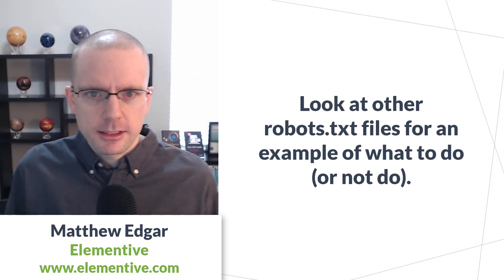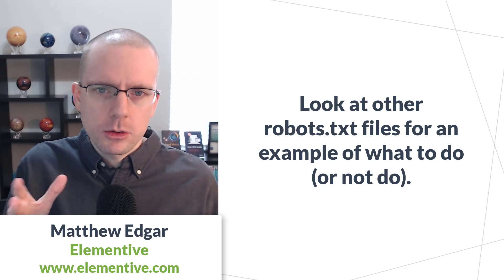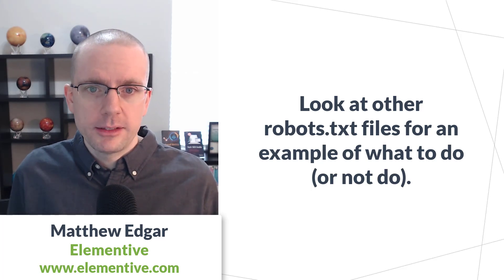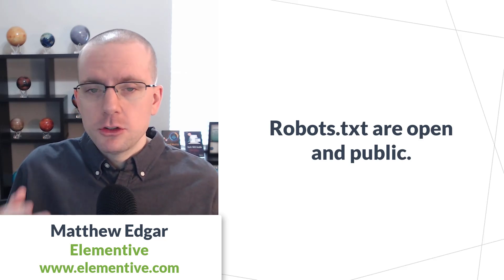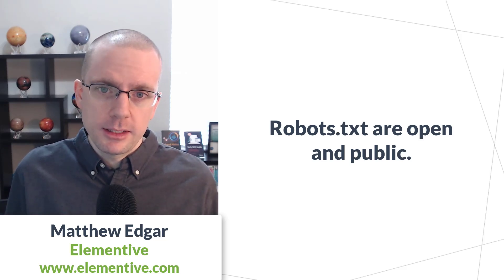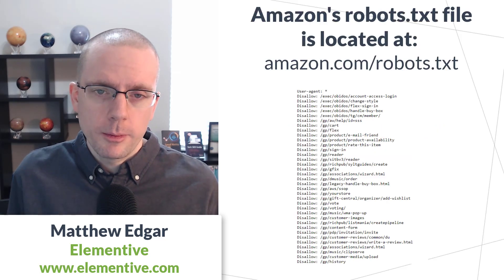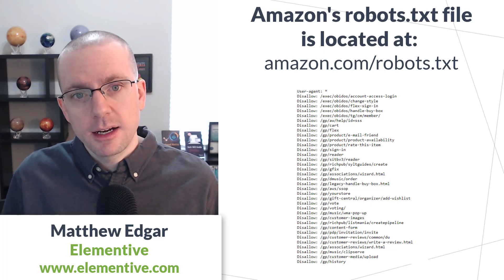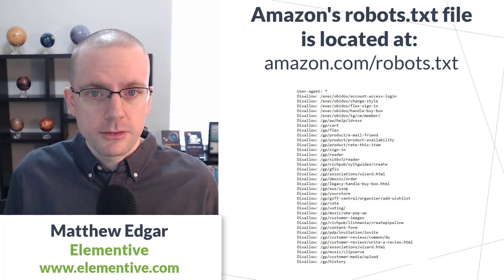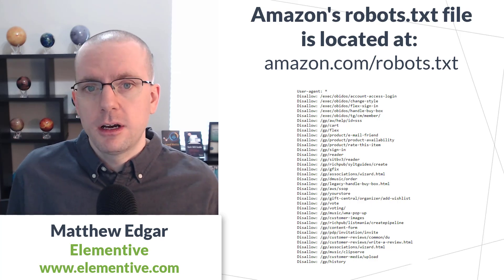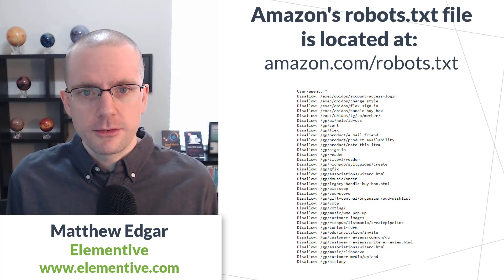Let's take a look at a robots.txt file and get an idea of how these files work and how we can use one to guide robots around our website. Robots.txt files are open and public, so you can view anybody's robots.txt file on the web. For example, you can view Amazon's robots.txt file by going to amazon.com/robots.txt. Amazon's robots.txt file is pretty involved — they have a lot going on, which is why it makes a good example to understand what a robots.txt file does.